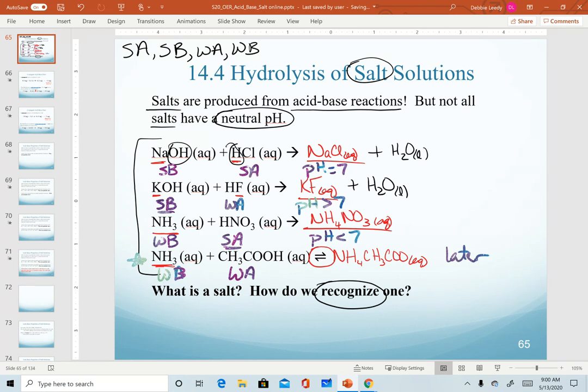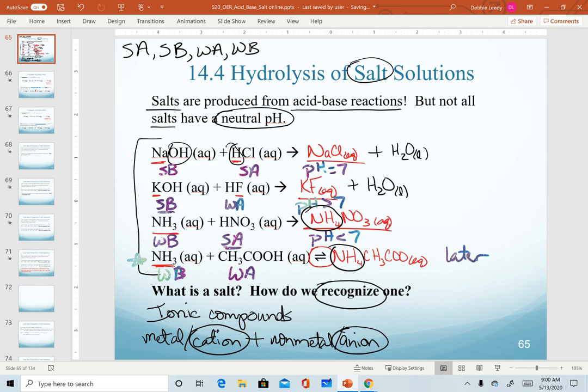The other thing to recognize as we discuss salt solutions is being able to recognize one. So recognize that salts are ionic compounds. Most of them are metal with a nonmetal. But notice in our last two examples, we don't have a metal here. We have just the cation of ammonium. An ionic compound is made up of a cation with an anion. So usually we have a metal as the cation.